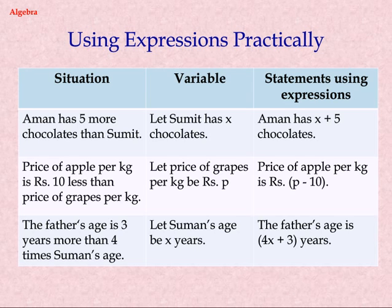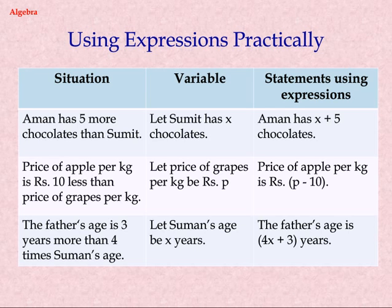Situation, Variable, Statements using Expressions. Amman has 5 more chocolates than Sumit. Let Sumit have X chocolates; then Amman has X plus 5 chocolates. Price of apple per kg is Rupee ten less than price of grapes per kg. Let price of grapes per kg be Rupee P; then price of apple per kg is Rupee P minus 10. The father's age is 3 years more than 4 times Summan's age. Let Summan's age be X years; then the father's age is 4X plus 3 years.